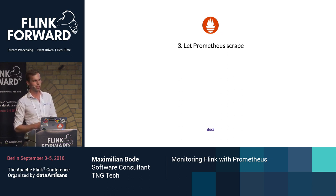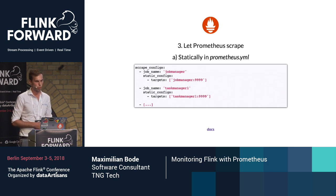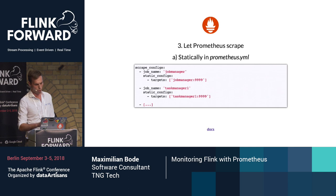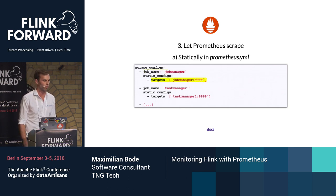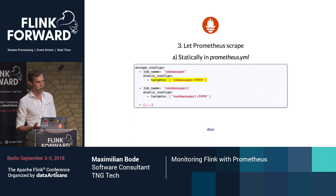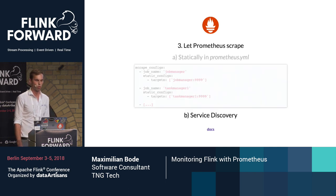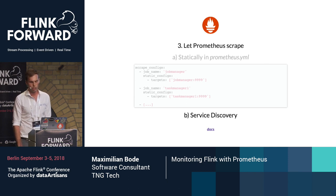The first option is the straightforward one. In static deployment scenarios, you can just configure Prometheus and tell it there's a class of workloads called 'job manager' and they are available under this address. In more dynamic environments, Prometheus also supports service discovery for different frameworks — Kubernetes, Amazon EC2, Consul, and many more.